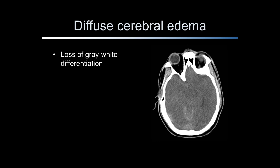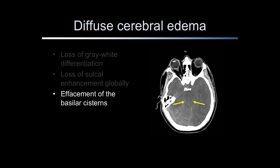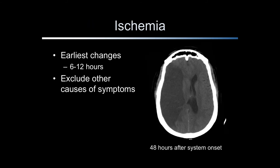Diffuse, or global, cerebral edema is identified by extensive and bilateral loss of gray-white matter differentiation, diffuse sulcal effacement, and effacement of the basilar cisterns, which includes the quadrigeminal cistern. Ischemic stroke is apparent on non-contrasted head CT scan in only 20-30% of patients, and the earliest findings may be seen at 6-12 hours. Head CT scan is done predominantly to exclude hemorrhagic stroke or other causes of a patient's symptoms. MRI may detect ischemic stroke findings as early as 2 hours after symptom onset. The head CT scan obtained 48 hours after symptom onset reveals edema manifest by a hypodense area in the right hemisphere with midline shift.